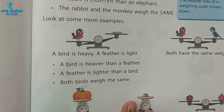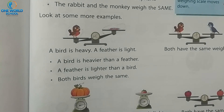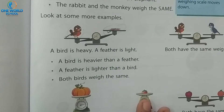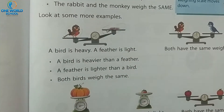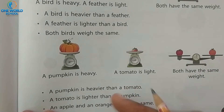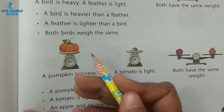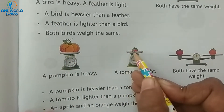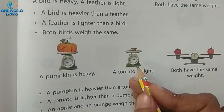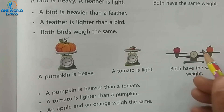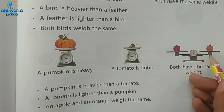See next: bird and feather — which is more heavy? Bird is heavier than feather, and feather is lighter than bird. Next picture: pumpkin and tomato — pumpkin is heavy and tomato is light. Pumpkin is heavier than tomato, and tomato is lighter than pumpkin. Then, tomato and orange — their weight is the same, so an apple and orange weigh the same.